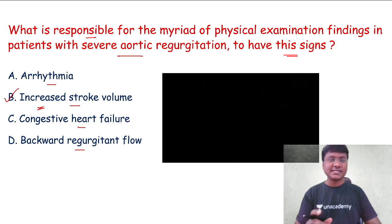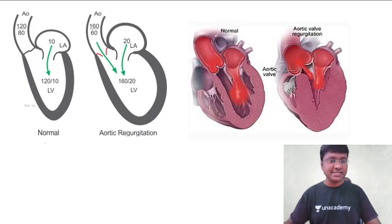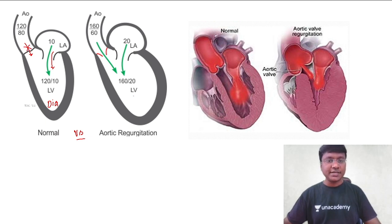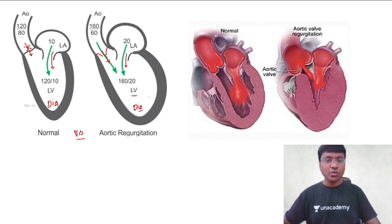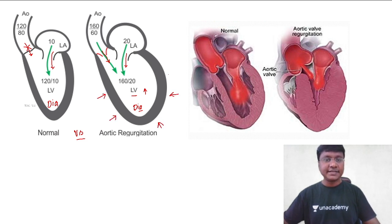Let me discuss what this increased stroke volume is and why it happens in aortic regurgitation. In a normal individual, whenever the ventricle is in a state of diastole, the ventricle will receive blood only from the left atrium — not from the aorta. But in patients with aortic regurgitation, during left ventricular diastole, the left ventricle will receive blood from the left atrium as well as regurgitant blood from the aorta. Thereby, the quantity of blood in the left ventricle increases compared to the normal value. Subsequently, when the left ventricle is contracting, there will be an increased volume of blood that enters into the aorta.